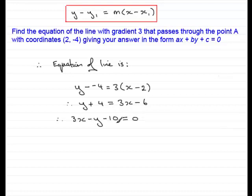So, I've got the equation now in the form that was requested and if I was asked what a, b and c were then a would be 3, b would be -1 and c would be -10.